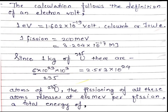The calculation of fission energy is done as follows. One electron volt is equal to 1.602×10⁻¹⁹ joules. Just converting 200 mega electron volts into mega joules, the equation becomes: 1 fission equals 3.204×10⁻¹⁷ mega joules of energy produced.